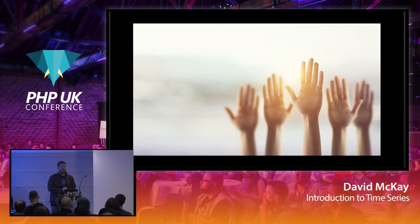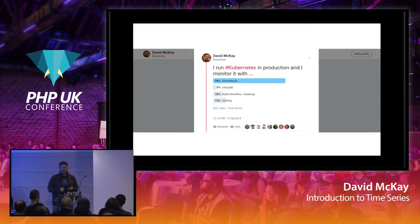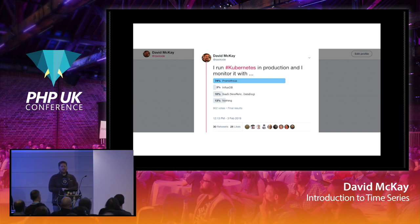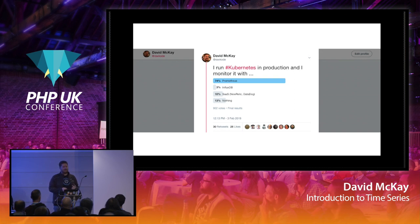Who's using Kubernetes? I ran a poll on Twitter around March last year asking 'I run Kubernetes in production and I monitor it with...' — 74% said Prometheus, which is great. 10% used a SaaS like New Relic or Datadog, 3% used InfluxDB, and 13% were using nothing. I did say production — 13% of people running Kubernetes in production are not monitoring it. If you're in that 13%, take what you learned today and start monitoring with InfluxDB or Prometheus.